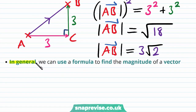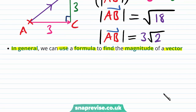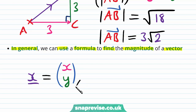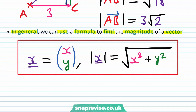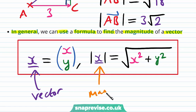We get that the magnitude of ab is going to be equal to 3√2. In general, we can use a formula to find the magnitude of a vector. If we have our vector x underlined equal to (x, y) in horizontal and vertical components, then the modulus of vector x is going to be equal to the square root of x squared plus y squared. This just comes from Pythagoras' theorem.